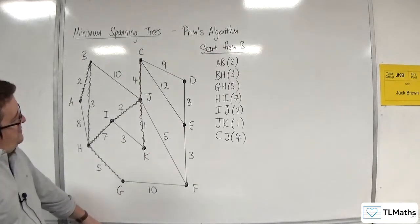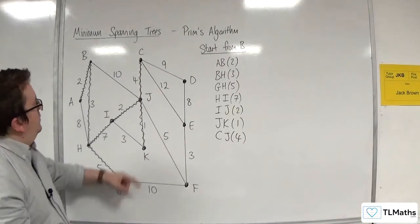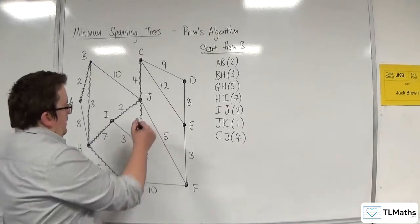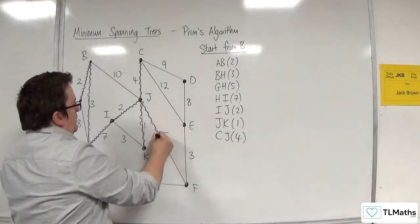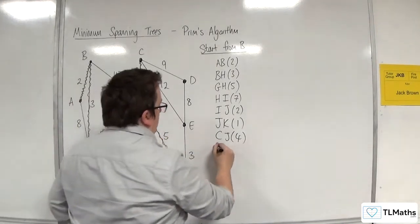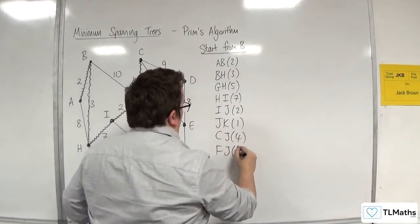Next one, we've got 9, 12. We've got the 5 there, so I think it's 5. So FJ with 5.